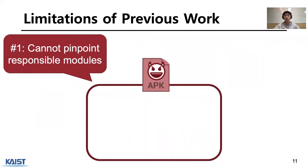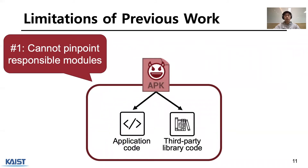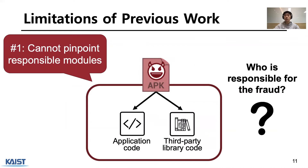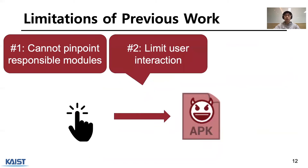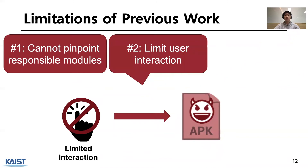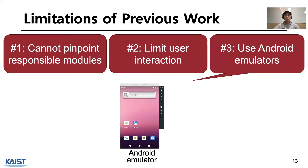There are three limitations in the previous works. First, they cannot pinpoint the ad module responsible for the observed fraud activities — a responsible module can be app code or a third-party library. This is important because fraud behavior can originate from embedded third-party libraries, not the hosting app. Second, the previous works restrict testing to environments with limited user interaction, so when an app requires user interaction before committing fraud, they cannot detect it. Third, previous systems leveraged emulators, so they may not observe ad fraud activity that only appears on real mobile devices.